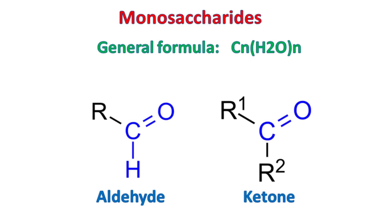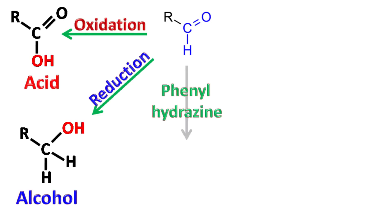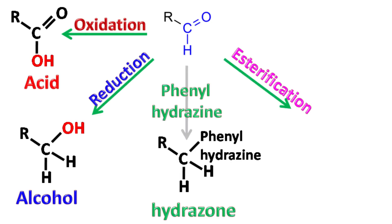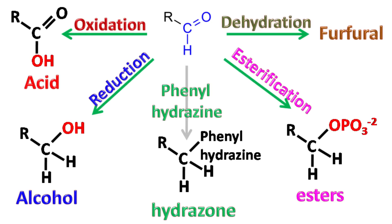Well, most of the monosaccharides have an aldehyde or ketone as a functional group, hence the chemical reactions that monosaccharides undergo will depend on these functional groups. These reactions are: oxidation to give acids, reduction to give alcohol, reaction with phenylhydrazine, formation of esters with phosphate groups, and dehydration — that is, removal of the hydroxyl group.